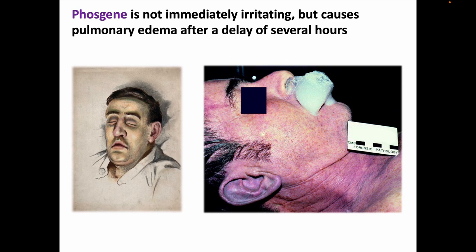A classic World War I phosgene case might go like this: the soldier was in an area shelled with chemical weapons and noted the smell of phosgene. They would go to a medical aid station where they were checked out and looked fine, so they were returned to duty. Then the next morning, they'd be found dead in the trenches with an effusion of pulmonary edema foam in their mouth.